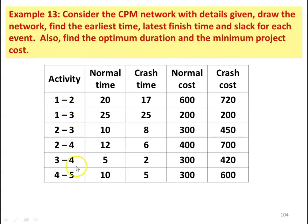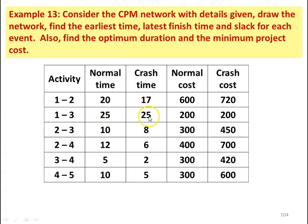We take example number 13. Consider the CPM network with details given. Draw the network, find the earliest time, latest finish time, and slack for each event. There are 6 activities: 1-2, 1-3, 2-3, 2-4, 3-4, and 4-5. The normal times are 20, 25, 10, 12, 5, and 10. The crash times are 17, 25, 8, 6, 2, and 5.